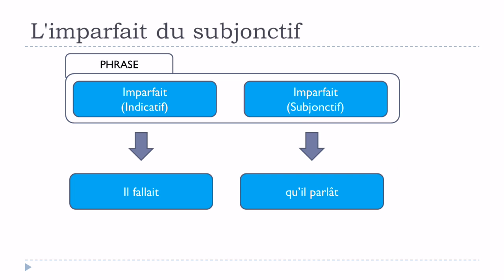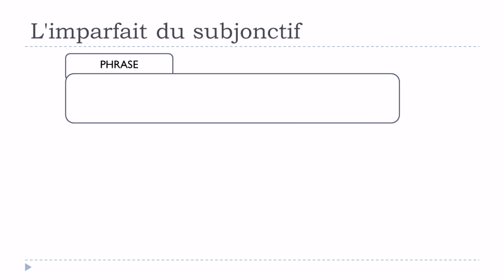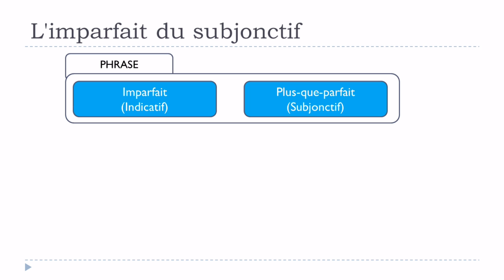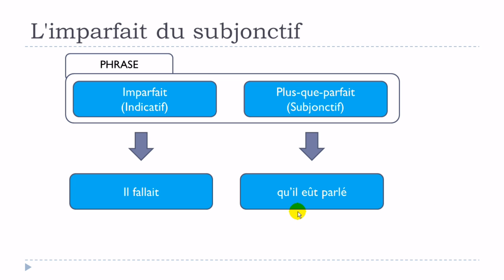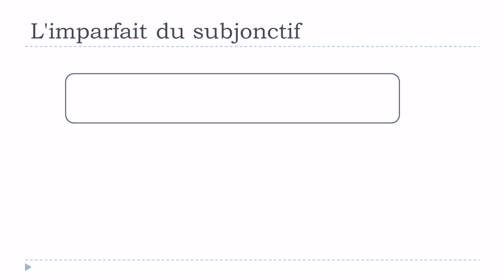It is also possible to have l'imparfait de l'indicatif in la principale and le plus-que-parfait du subjonctif in la subordonnée. In that case we get: il fallait qu'il eût parlé. Here il fallait is l'imparfait de l'indicatif and qu'il eût parlé is le plus-que-parfait du subjonctif.